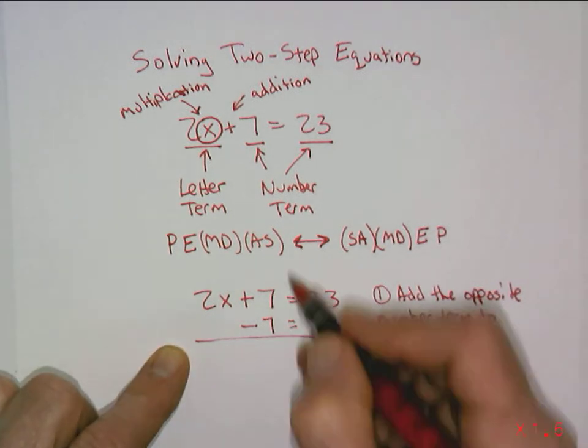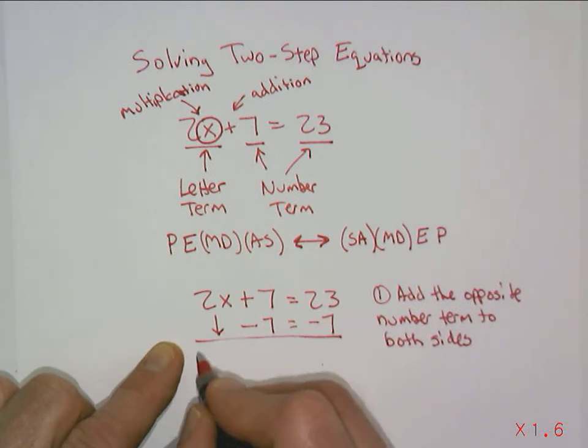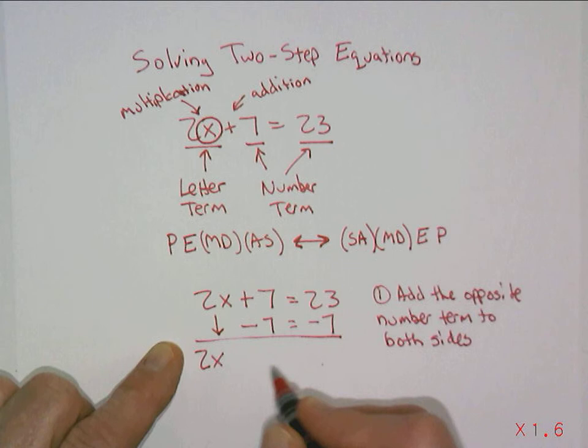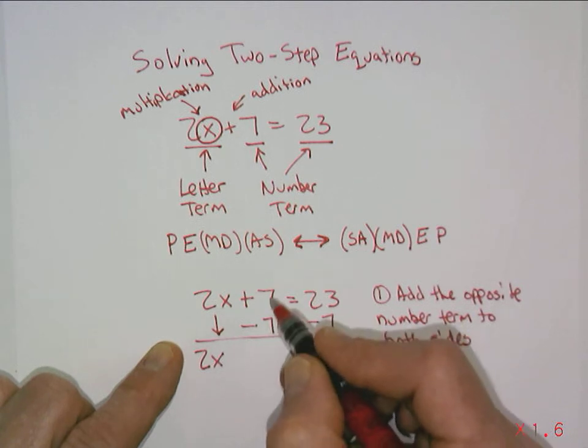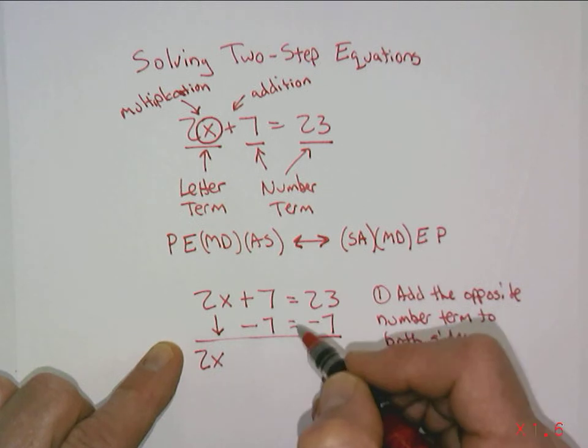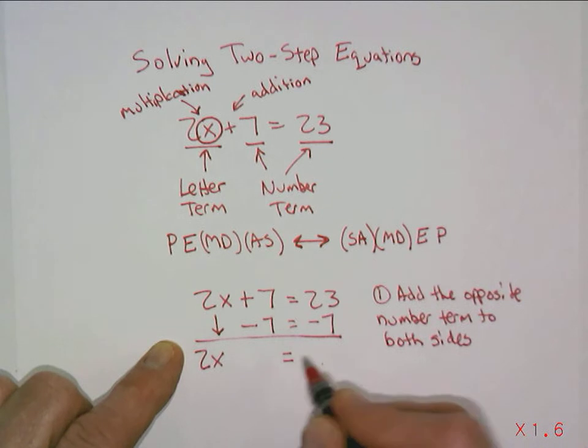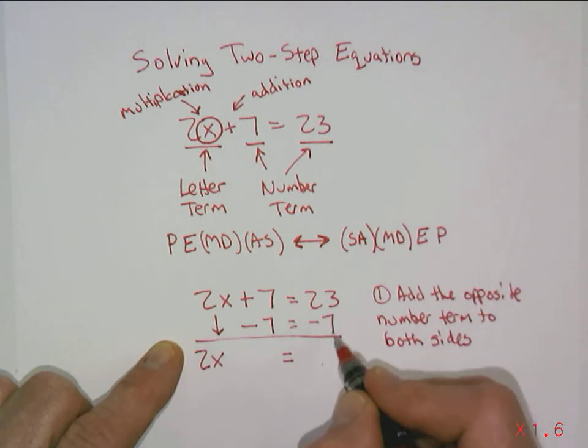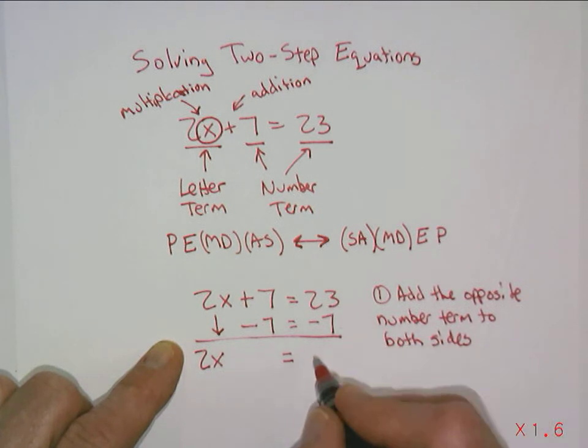So I'm going to set it up like a normal addition problem if you would work up and down. And so we're going to work down. And this 2x, since we didn't do anything to the 2x, it's just going to come down. The plus 7 and minus 7, the additive inverse of plus 7 is minus 7, makes this 0, which makes it go away, which is the object to get everything away from the x. And then 23 and then plus a negative 7, or you can think of it as 23 minus 7, is 16.